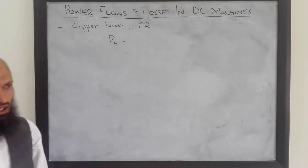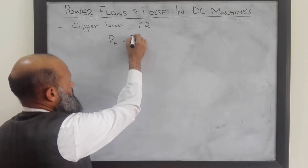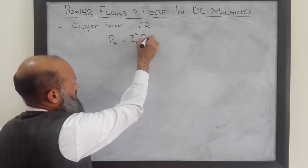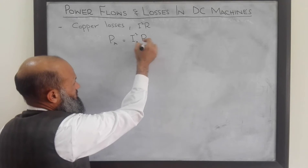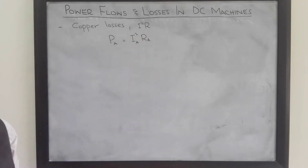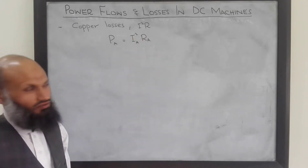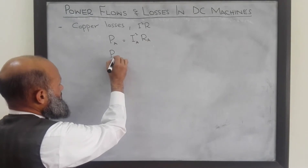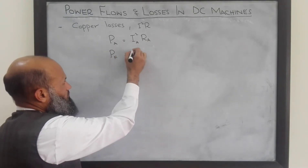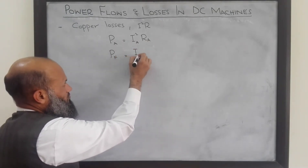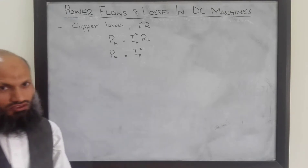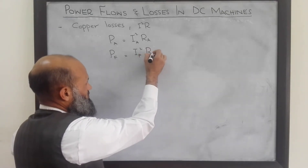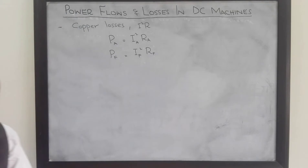The power losses in the armature winding are equal to the armature current squared multiplied by the resistance of the armature winding (I_A²R_A). There are also losses in the field winding, equal to the square of the current flowing in the field winding multiplied by the resistance of the field winding (I_F²R_F).